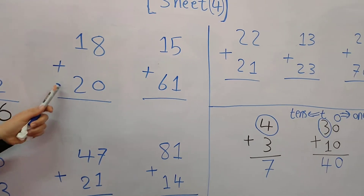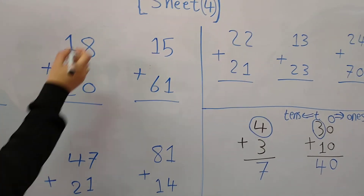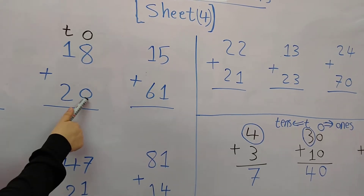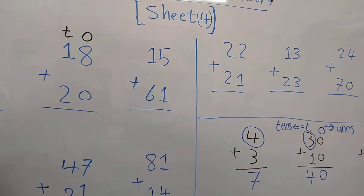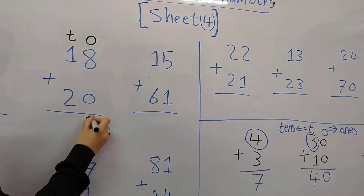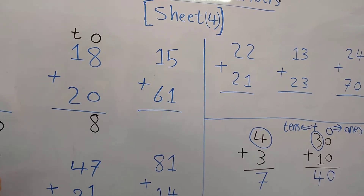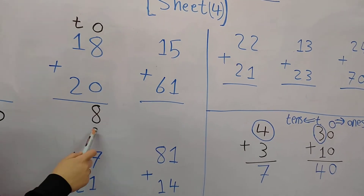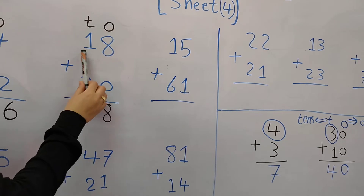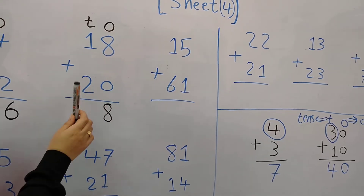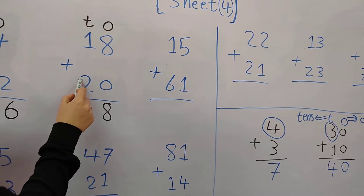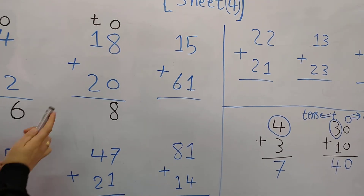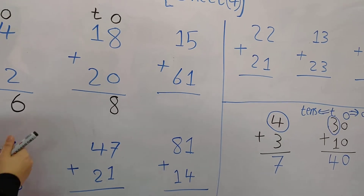18 plus 20. The first thing: write O and T. In the 1's column: 8 plus 0 equals 8. Why? 0 is like a mirror — any number plus 0 equals the same number. So 8 plus 0 equals 8. In the 10's column: 1 plus 2. Where is the greatest? 2. I put 2 in my mind and 1 on my fingers and count after 2. After 2: 3. Write 3.